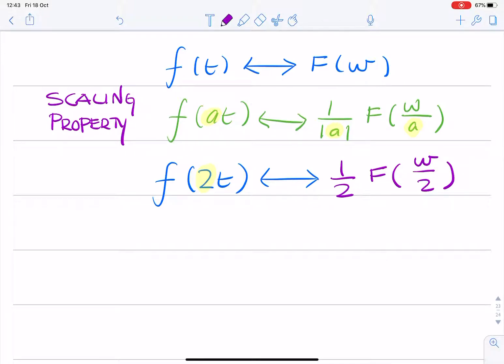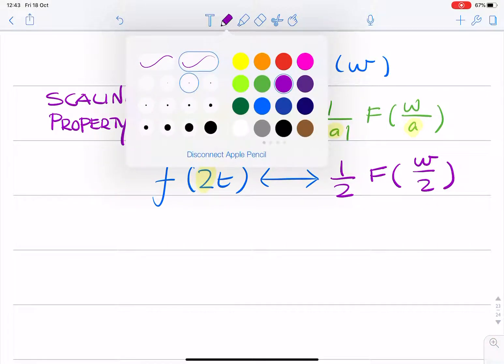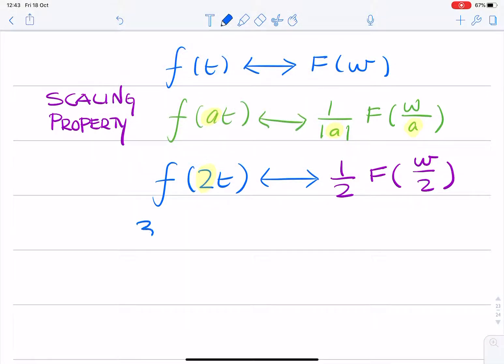That's straightforward. The next question is just an indication of linearity, really. If you multiply your function by some constant, 3, then the Fourier transform will similarly be multiplied by that same constant. So that's straightforward.